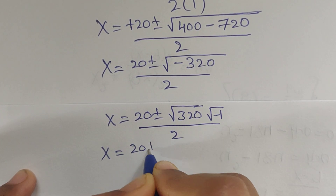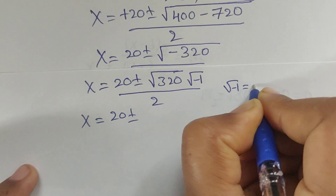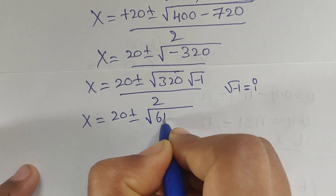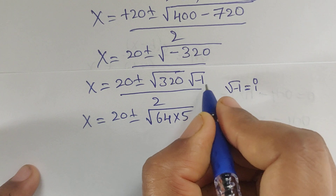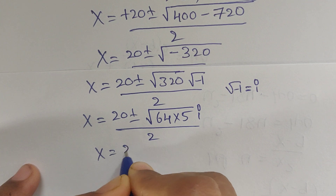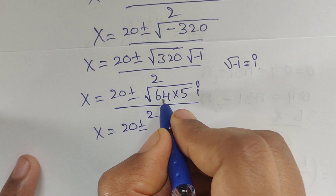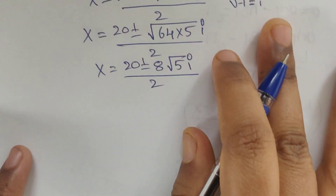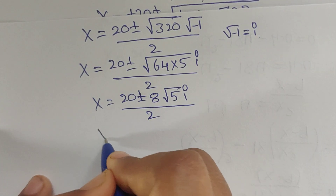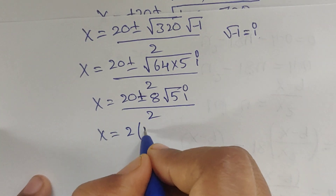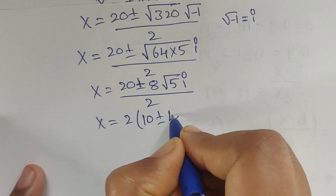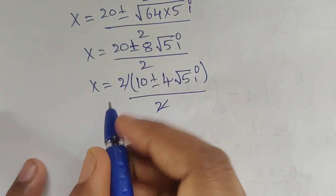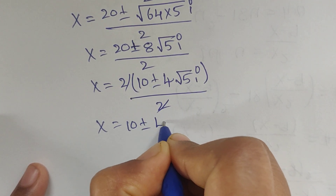So x equals 20 plus or minus square root of minus 320, divided by 2. Since square root of minus 1 is imaginary and equals i, and square root of 320 equals square root of 64 times 5, which gives 8 square root of 5 times i, we get x equals 20 plus or minus 8 square root of 5 i, divided by 2. Taking out common factor 2: x equals 10 plus or minus 4 square root of 5 i.